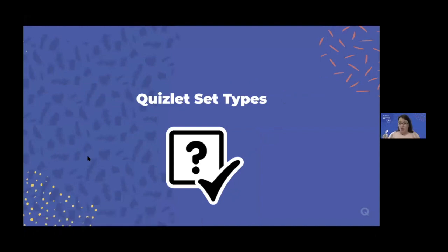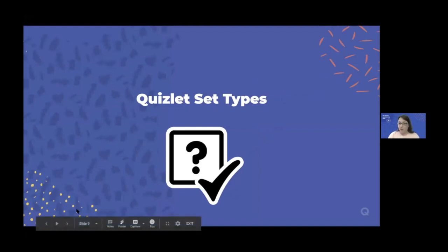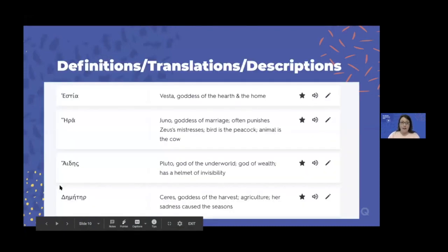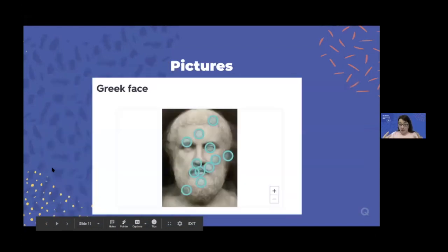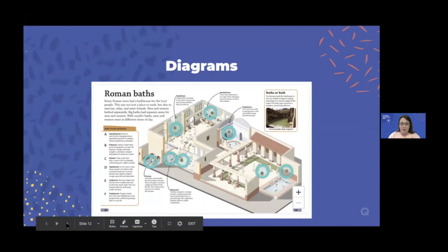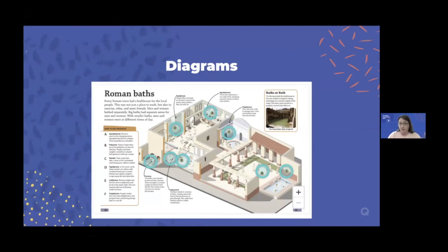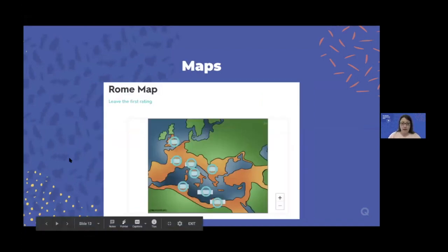Here are the different things you can do with Quizlet — this is not an exhaustive list. I'm a language teacher, so I use this for topics or different texts, doing several Quizlets for one text. A lot of these are from my unit on Greek mythology gods or Caesar's De Bello Gallico book one. You can do definitions, translations, or descriptions; use pictures to have students identify parts relating to the lesson; use diagram-style pictures to label what's in them; and use it for maps — it's a really great tool for maps.